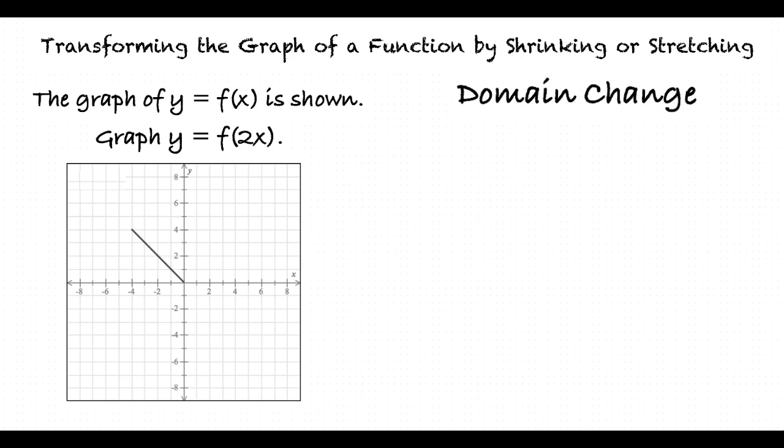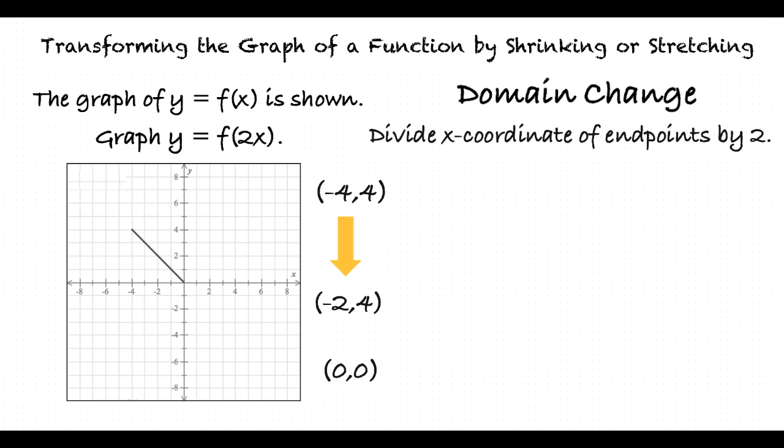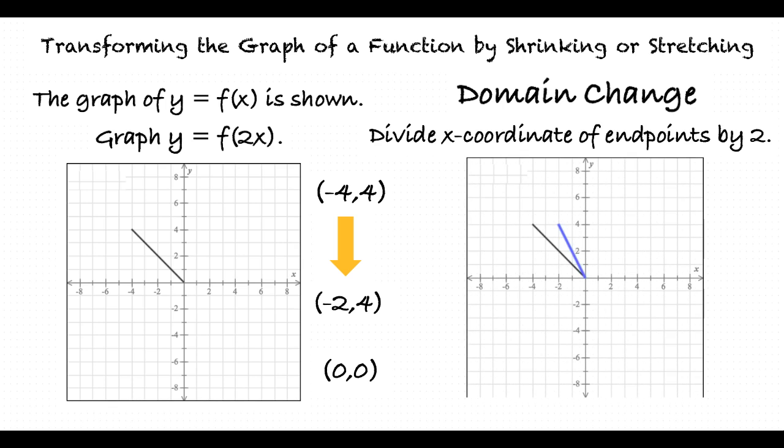Since this function is one line, dividing the x-coordinates of the endpoints by 2 and drawing the new line segment will result in our answer. This line segment now goes from negative 2, 4 to 0, 0.